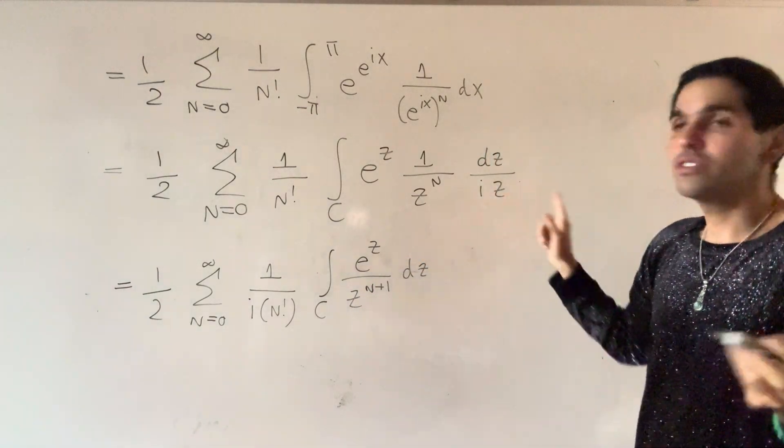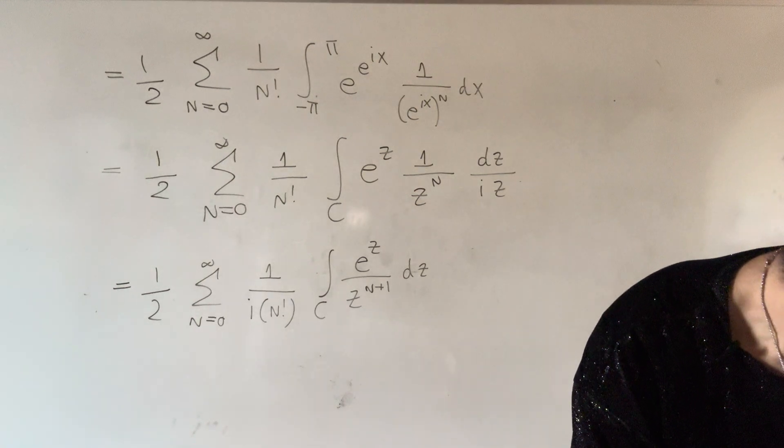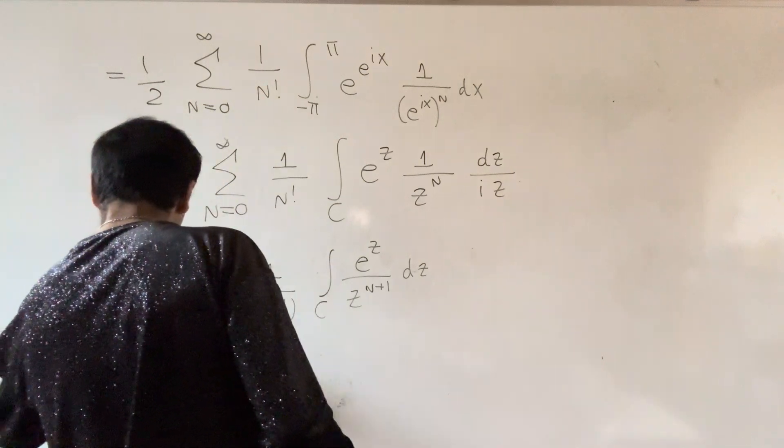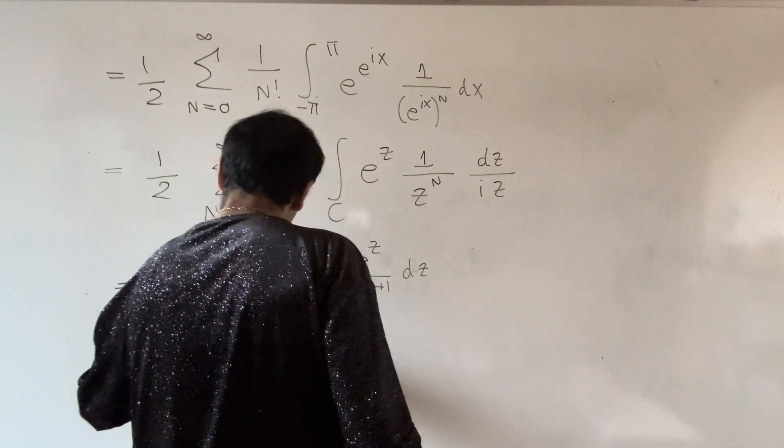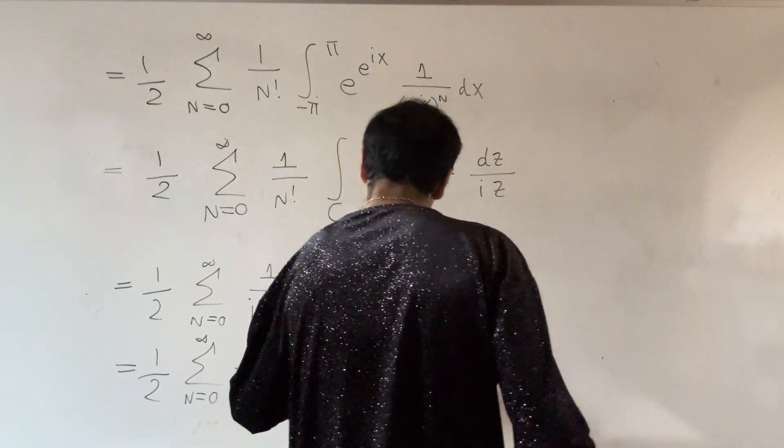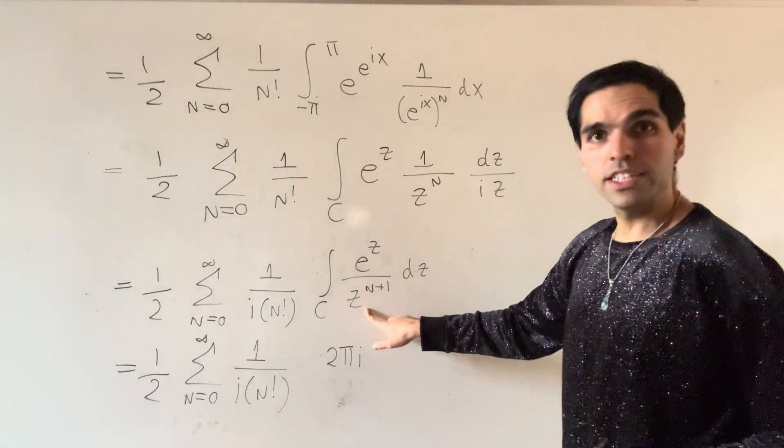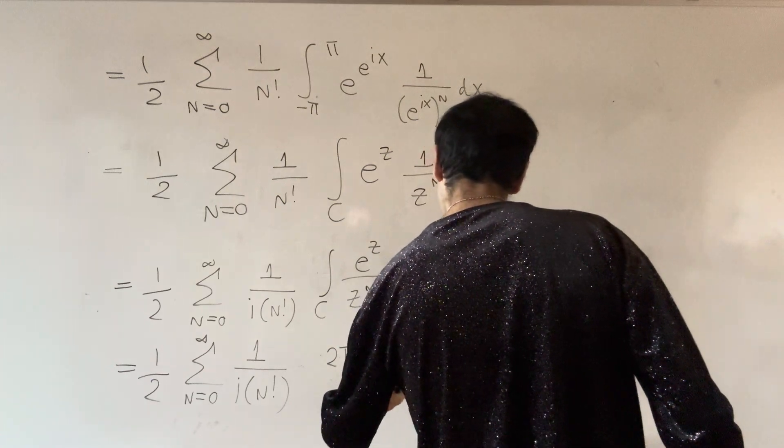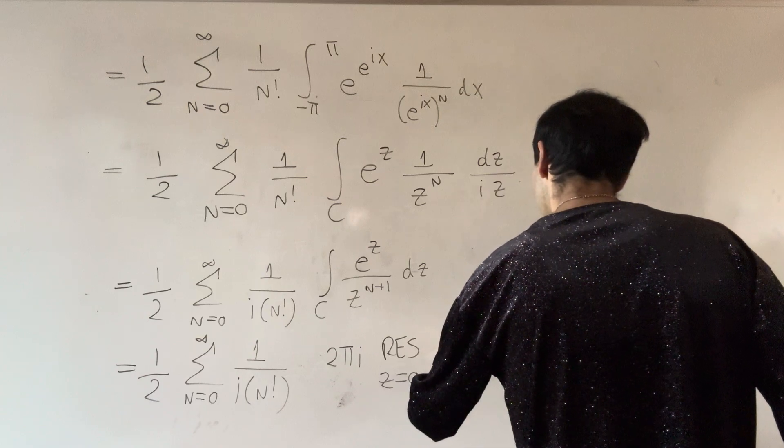So, n plus one comes from z to the n, and this z. And the cool thing is, we can now evaluate it using residues. So, this becomes one half, the sum from zero to infinity, of one over i, n factorial, two pi i. Now, the only singularity is at z equals zero. So, it's two pi i times the residue, at z equals zero, of e to the z, over z to the n plus one.